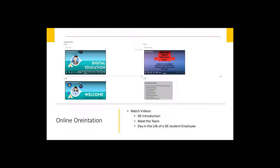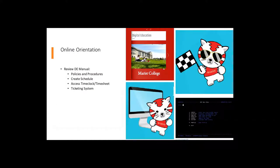Next, they review our digital education manual, which states our policies and procedures. They will create their schedules and read documentation on how to access their timesheets and log into our time clock system. Since students self-select their schedule during normal business hours, they are expected to be here on time during their shifts. Lastly, they will get a quick overview on how to use our ticketing system. To keep them engaged, we've hidden our adorable Sakaiager mascot of Sakai, our learning management system, throughout the online orientation.